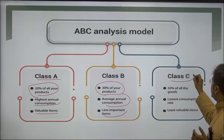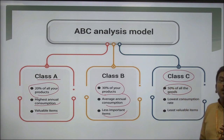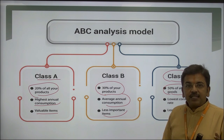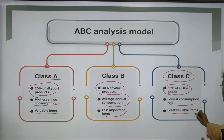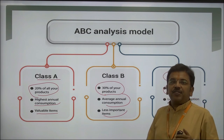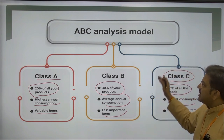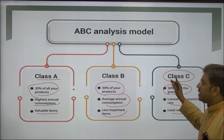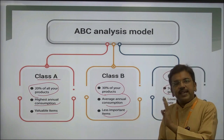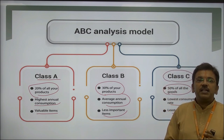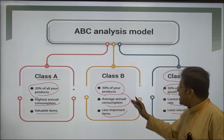For Class C items, the example is sand. Here 50% of all goods are taken, and it can be bought in mass with the lowest consumption rate at less cost. Sand represents the least valuable items — you can keep sand anywhere because it is least affected by environmental impact. In ABC analysis, products are divided by cost and quality: the higher the cost, the more it belongs in the A section; the lowest-cost raw materials go into the C section, categorized by durability.